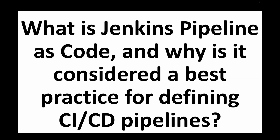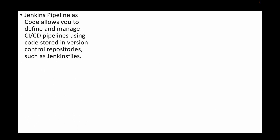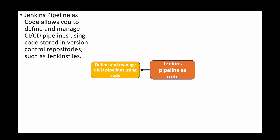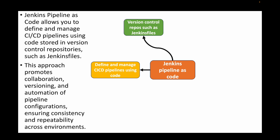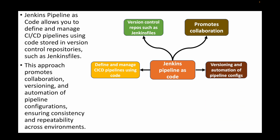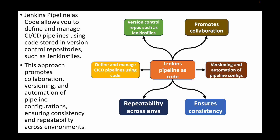The next question is: what is Jenkins pipeline as code and why is it considered a best practice? The best practice is to write the Jenkins pipeline using code — specifically Groovy — stored in version control as a Jenkinsfile. This approach promotes collaboration among team members, allows for versioning, and automates pipeline configurations. It also ensures consistency and repeatability across different environments since the same code is used everywhere.